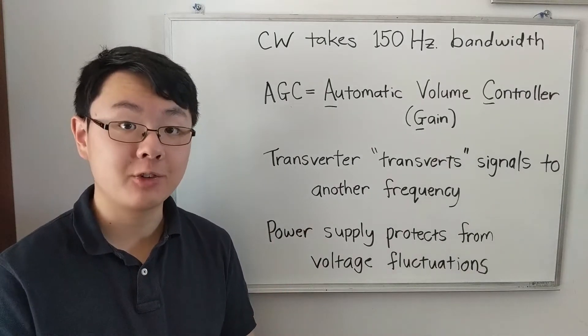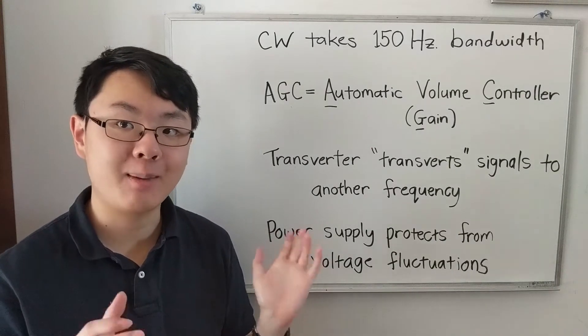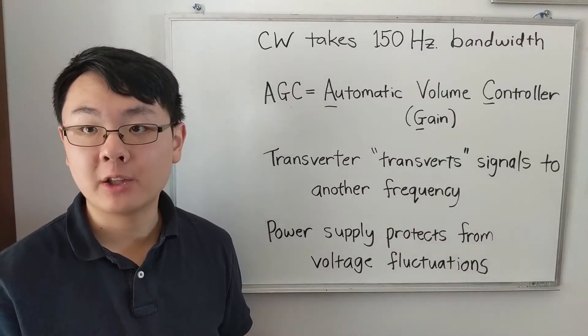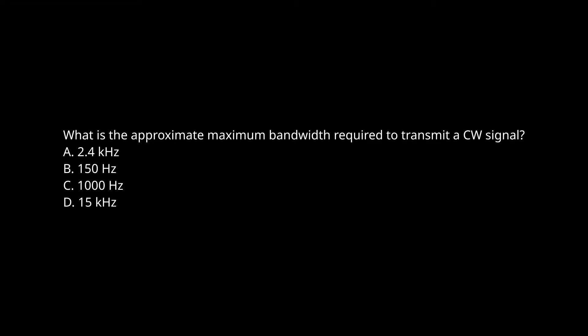I have a special trick to get through these questions on the Ham Radio exam. This question asks: what is the approximate maximum bandwidth required to transmit a CW signal? CW means Morse code, continuous wave. Choices are A: 2.4 kHz, B: 150 Hz, C: 1000 Hz, and D: 15 kHz. The answer is B — 150 Hz is the approximate bandwidth required to transmit a Morse code signal.